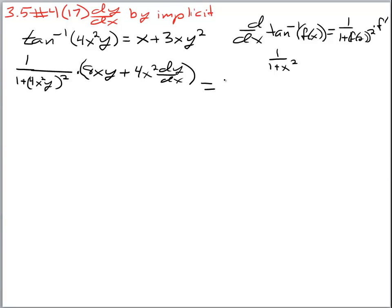Equals the derivative of the right hand side — the first piece is easy, that is a 1, plus the derivative of the second piece, also using the product rule: derivative of the first times the second plus the first times the derivative of the second. So that is it as far as calculus is concerned. We are done with calculus at this point. The rest is all algebra, and it is a lot of it.